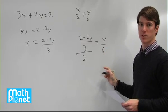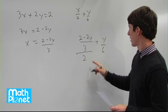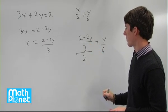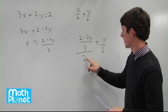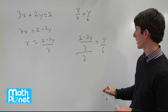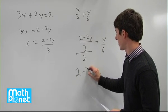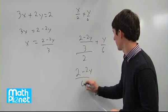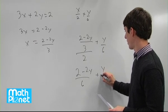Now we need to just simplify this and write in simple form. If we have a fraction divided by a number, the denominators get multiplied together. So we have 2 minus 2y over 6, plus y over 6.